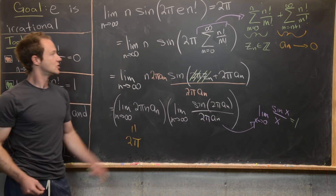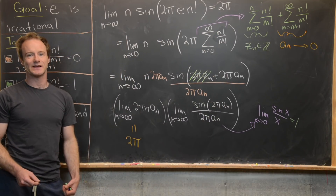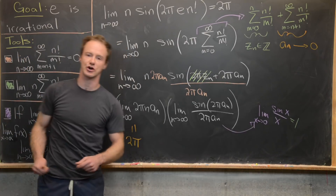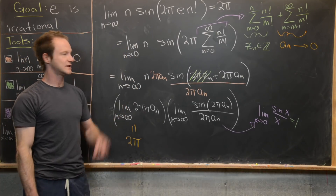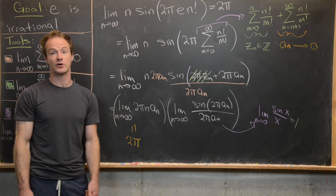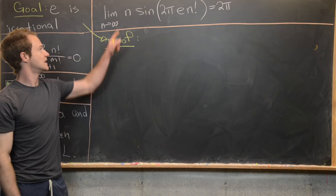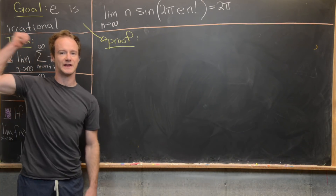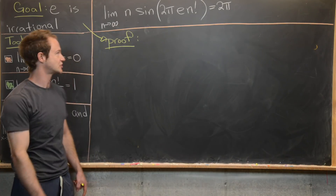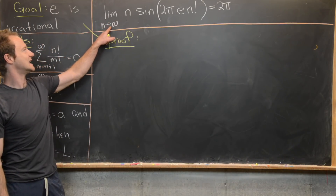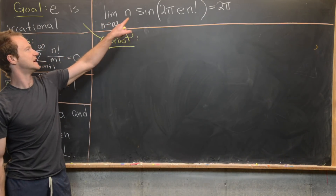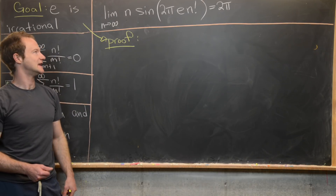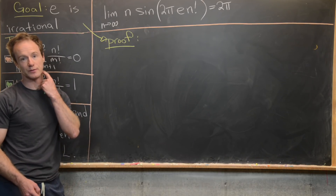So we've proven the complementary limit: the limit as n goes to infinity of n times sine of 2π·e·n factorial equals 2π.